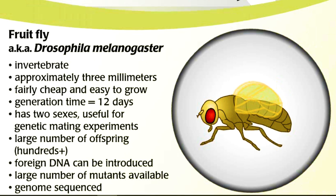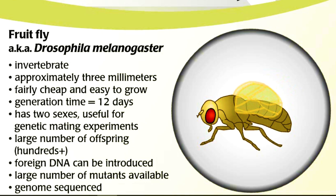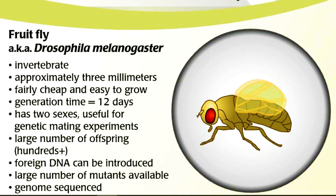Fruit fly: Drosophila melanogaster. Invertebrate. Approximately 3 millimeters. Fairly cheap and easy to grow. Generation time is 12 days. Has 2 sexes, useful for genetic mating experiments. Large number of offspring, 100 plus. Foreign DNA can be introduced. Large number of mutants available. Genome is also sequenced.